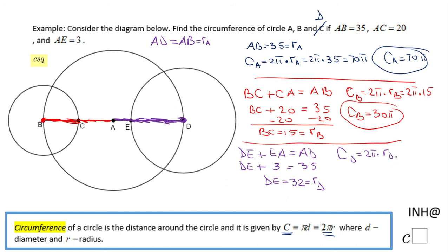The radius in this case is 32, and the final answer will be 64π.